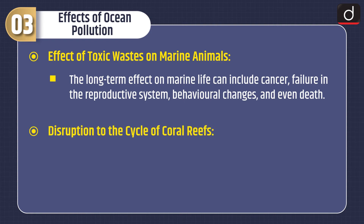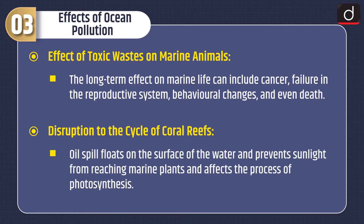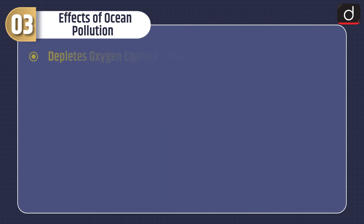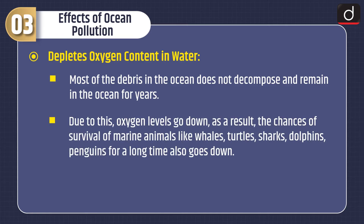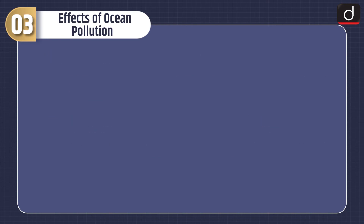Second is disruption to the cycle of coral reefs. Oil spills float on the surface of the water and prevent sunlight from reaching marine plants, affecting the process of photosynthesis. Third is depletion of oxygen content in water. Most of the debris in the ocean does not decompose and remains for years. Due to this, oxygen levels go down, reducing the chances of survival of marine animals like whales, turtles, sharks, dolphins, and penguins.